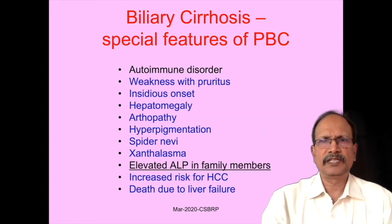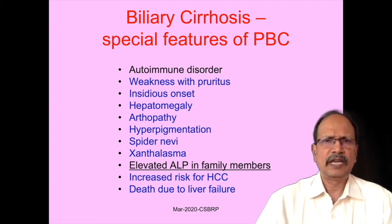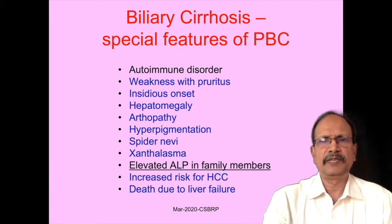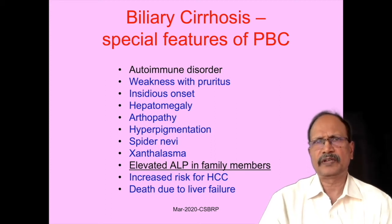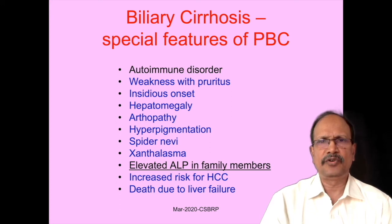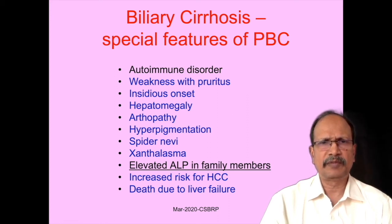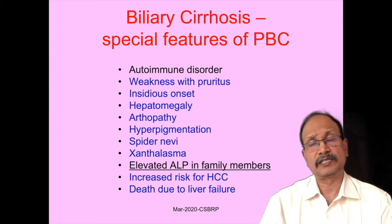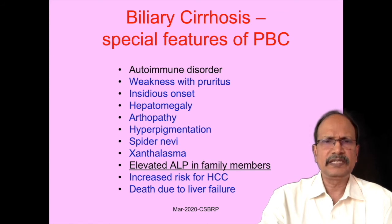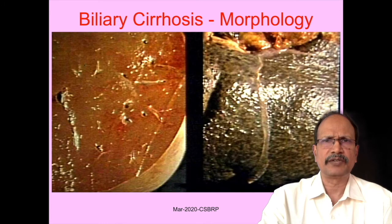Special features of biliary cirrhosis: you should not forget that primary biliary cirrhosis is an autoimmune disorder. One more important point is elevated ALP in the family members. So, if you are thinking of biliary cirrhosis and family members show elevated ALP, then you should think of the possibility of autoimmune etiology in the case of biliary cirrhosis. Other findings like weakness, pruritus, hepatomegaly, arthropathy, and spider nevi may be seen associated with any cirrhosis. Death due to liver failure occurs in a later stage of biliary cirrhosis, and there is increased risk for the development of hepatocellular carcinoma in biliary cirrhosis.